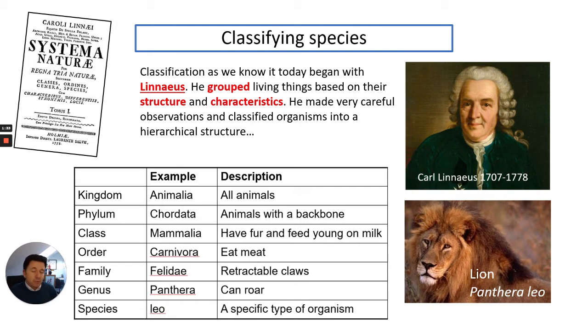Here's an example of a hierarchical structure. The hierarchy is kingdom, phylum, class, order, family, genus, and species. That is something you're going to have to learn for your exam, however you're not going to need to learn the example. This is just an example for you to look at related to the lion, Panthera leo.